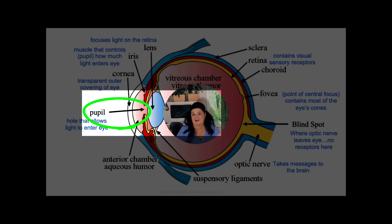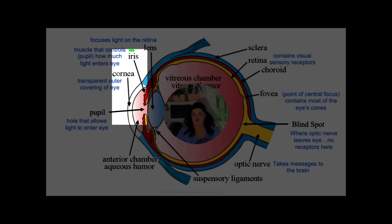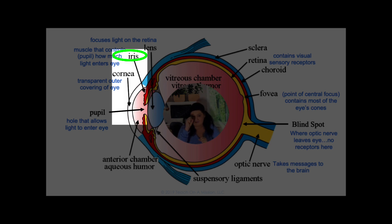We talk about the pupil constricting or dilating — meaning it either gets larger or smaller depending on how much light. That sizing mechanism is controlled by the iris, which is the colored part of your eye, whether you're a blue-eyed or brown-eyed person. The iris is the muscle that allows your eye to let light in, making the pupil opening smaller or larger. If you're in a very bright room, your pupils get really tiny because it doesn't need much light. In a dark room, your pupils get really wide because it needs any light it can find.